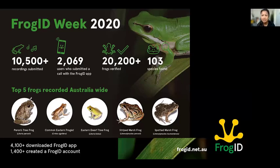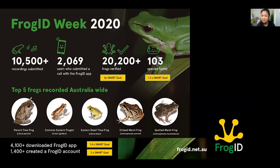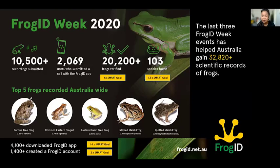Through FrogID Week we can attract new participants, promote our conservation message, maximize user retention over time, and target areas where we need more frog records. 2020 met all of our marketing team's SMART goals, and importantly FrogID Week over the last three years has helped collect over 32,000 expert-verified frog records across Australia, filling important data gaps for frog conservation. FrogID Week is the most rapid data collection of frogs anywhere in the world, thanks to the power of citizen science and the communications and marketing strategies by the Australian Museum.